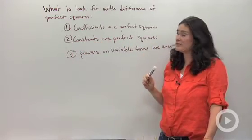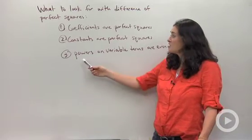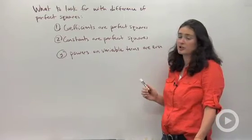the coefficients are perfect squares, the constants are perfect squares, and the powers on the variable terms are even.